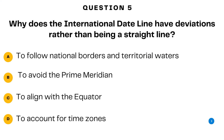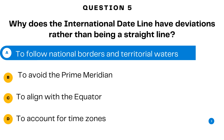Question number five. Why does the international dateline have deviations rather than being a straight line? A. To follow national borders and territorial waters. B. To avoid the prime meridian. C. To align with the equator. Or D. To account for time zones. The answer is A — to follow national borders and territorial waters. The international dateline has deviations primarily to accommodate political, economic, and social considerations. These deviations are practical adjustments to ensure the dateline works smoothly, balancing the need for a clear global timekeeping system.